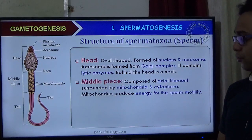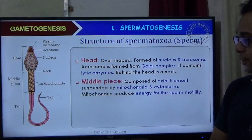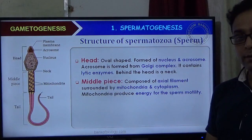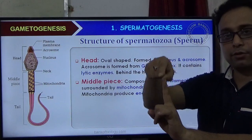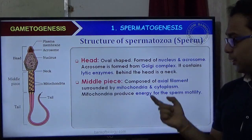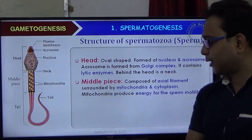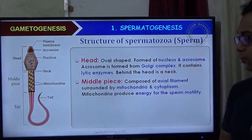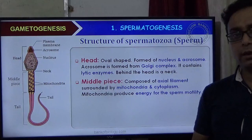Behind the neck is the middle piece, which is very important. The middle piece contains: number one, an axial filament — an internal long filamentous structure; number two, spiral mitochondria; and number three, internal cytoplasm, which is present because it is a cell. The mitochondria here differ from normal mitochondria.